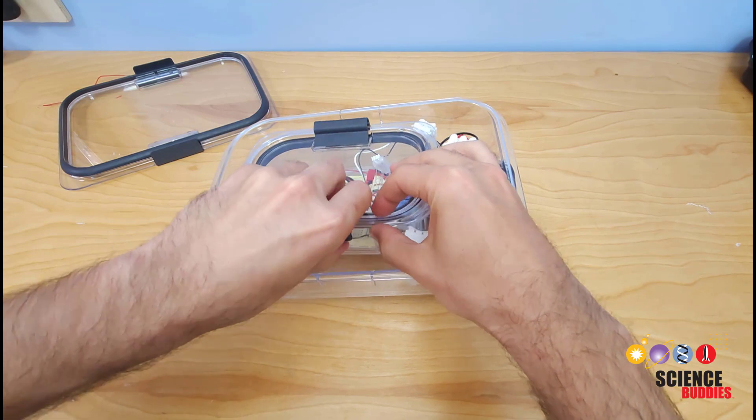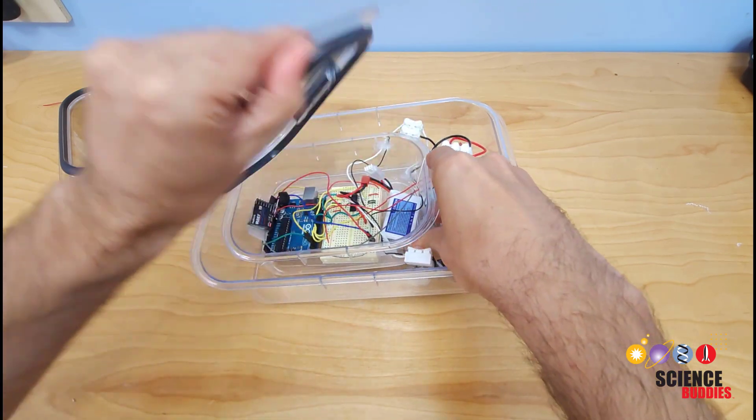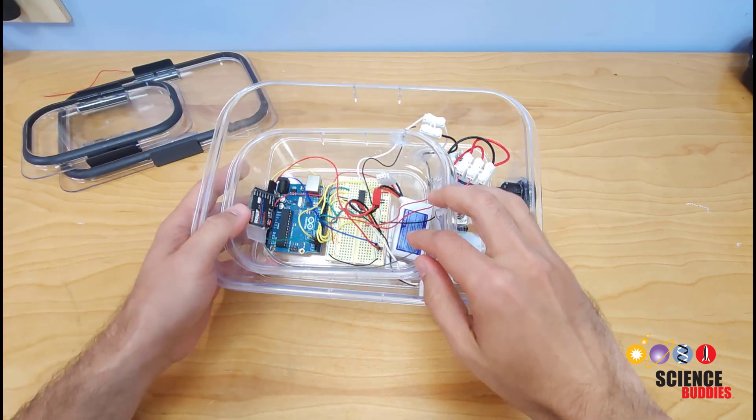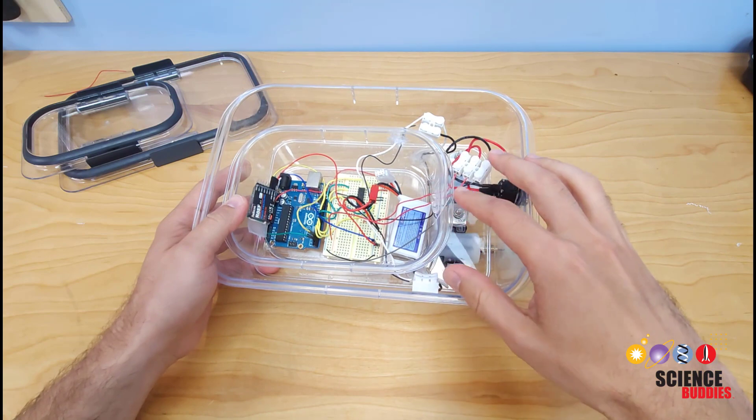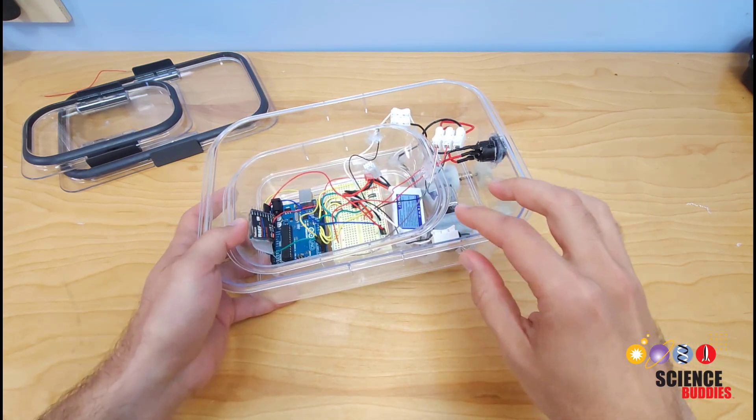So I can pop off the lid on this inner container, which again is providing that extra layer of leak protection for the Arduino, and see everything inside here. So what we're going to do next is take all of these parts out and talk about how the circuit works before we talk about how to physically assemble the boat.